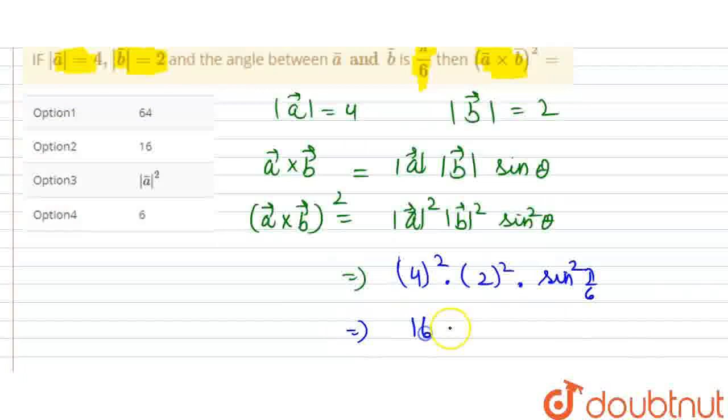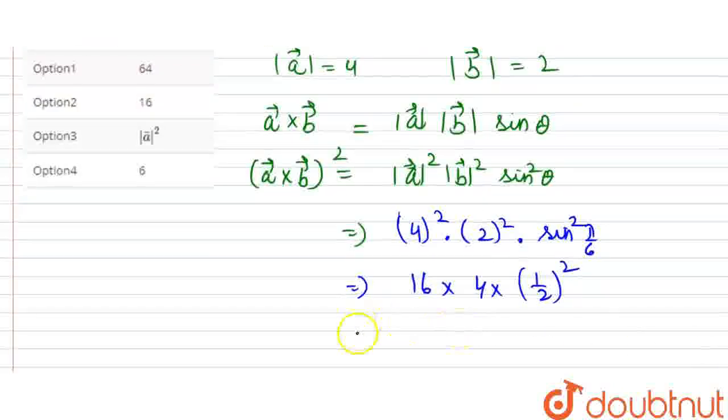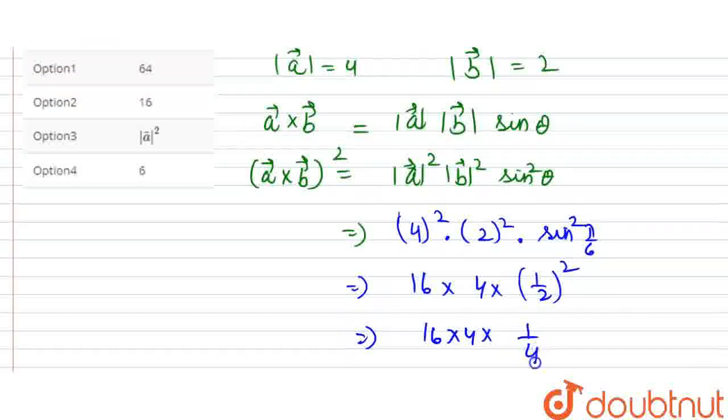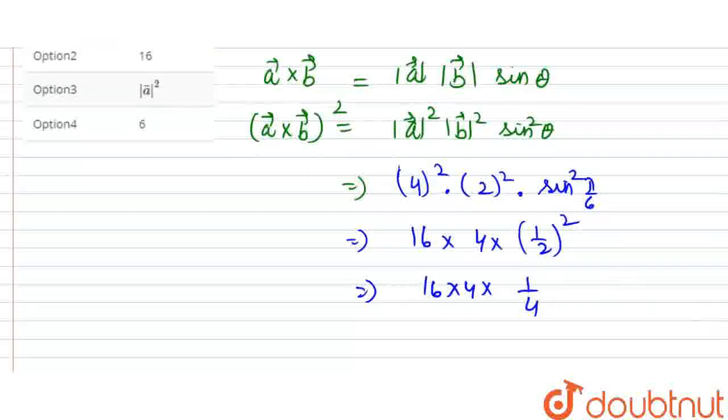4² is 16, 2² is 4, and sin π/6 is 1/2. So 1/2 will be squared here. So, 16 × 4 × 1/4. Here we will simply cancel 4 from 4. And what will we get? We will get 16.